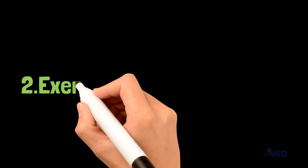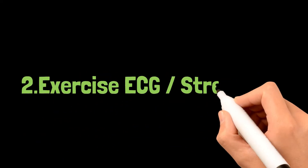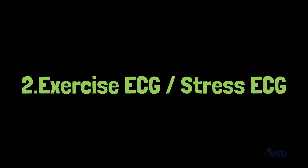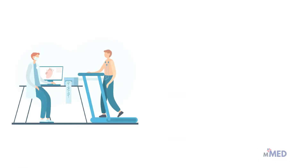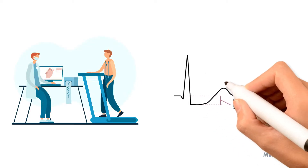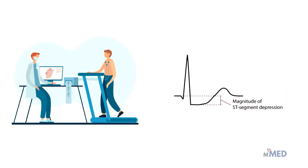Number two: exercise ECG. This is an ECG done when the patient is under stress. We can observe ST depressions in this case, but it can also produce a false positive result if the patient is on drugs like digoxin.